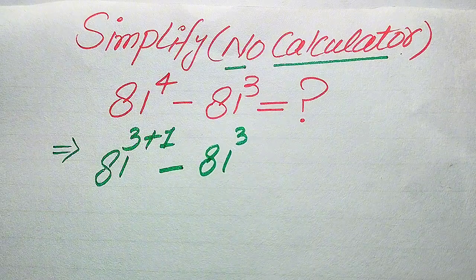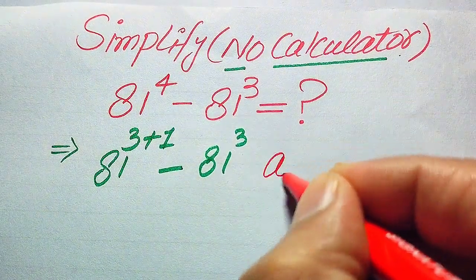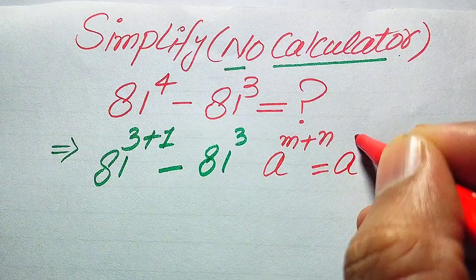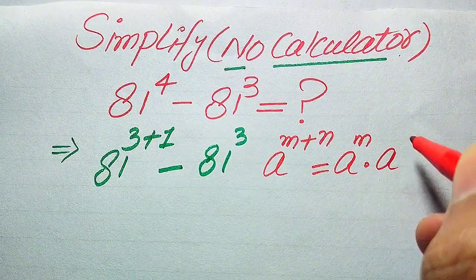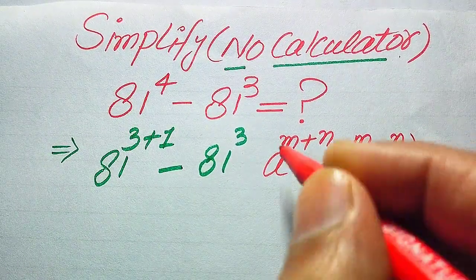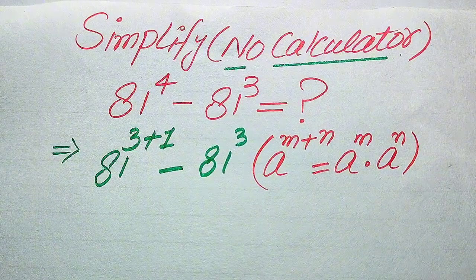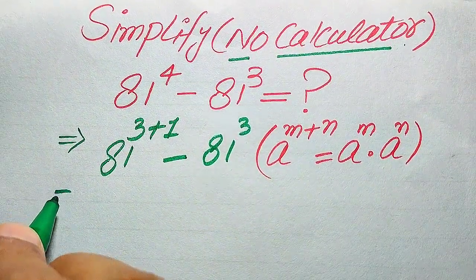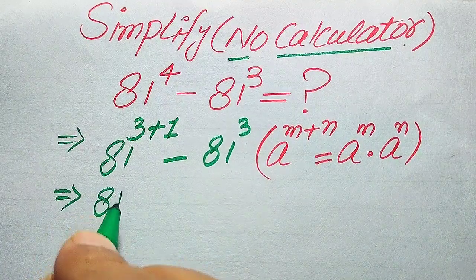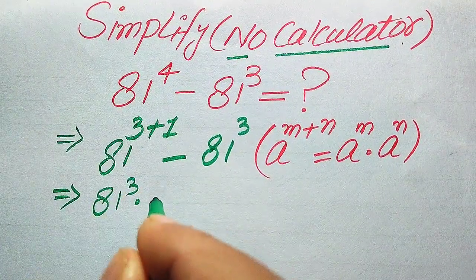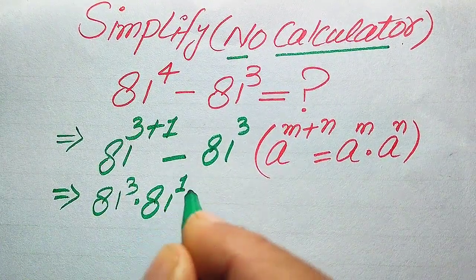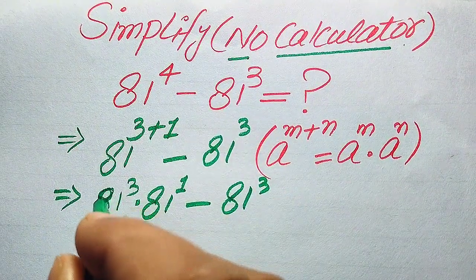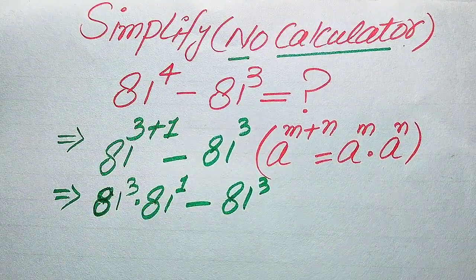Here we use the algebraic formula: a to the power of m plus n equals a to the power of m multiplied by a to the power of n. According to this rule of exponents, we break the exponent and write 81 to the power of 3 multiplied by 81 to the power of 1, minus 81 to the power of 3.